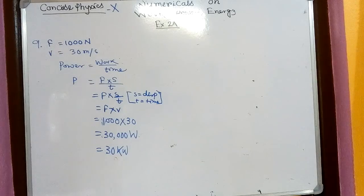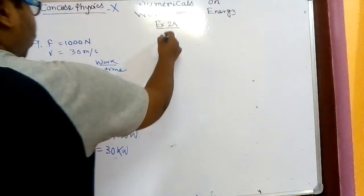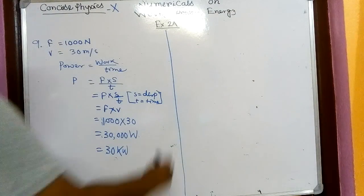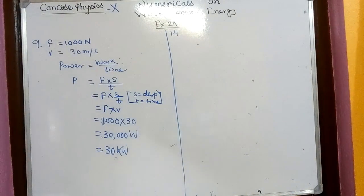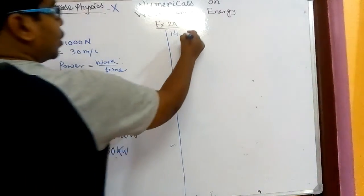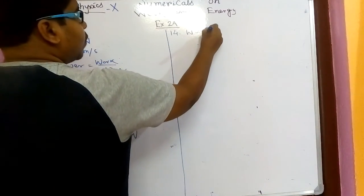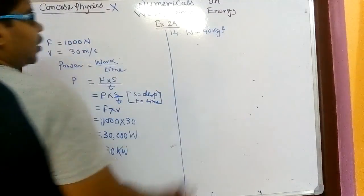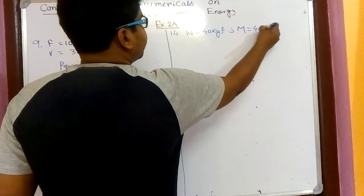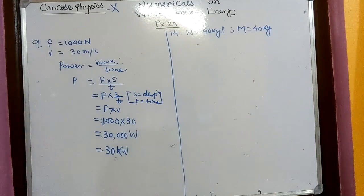Now go for question number 14. It is not tough but we'll do some important questions that may come in the exam. Question number 14: a boy of weight 40 kgf — it is given in gravitational units, 40 kgf, kilogram-force. From here we can conclude mass m equals 40 kg.